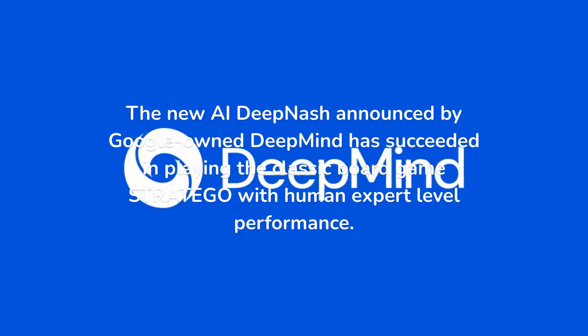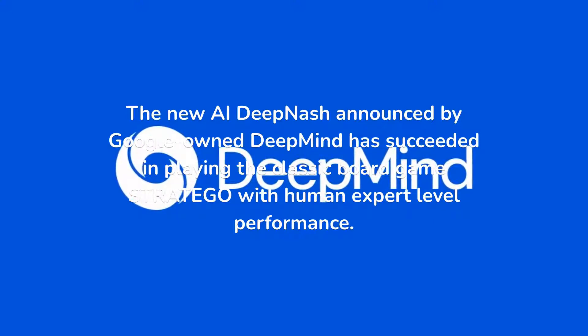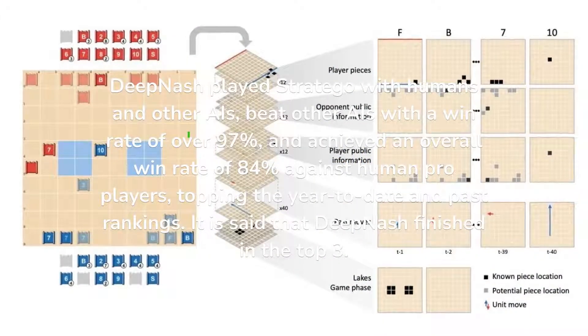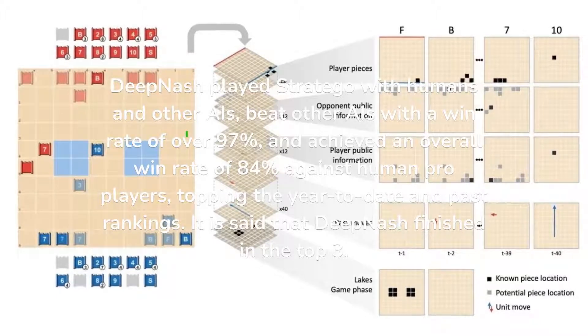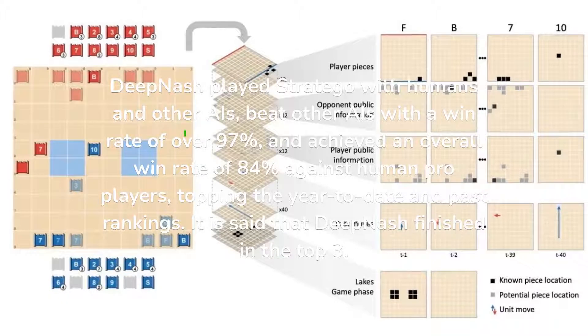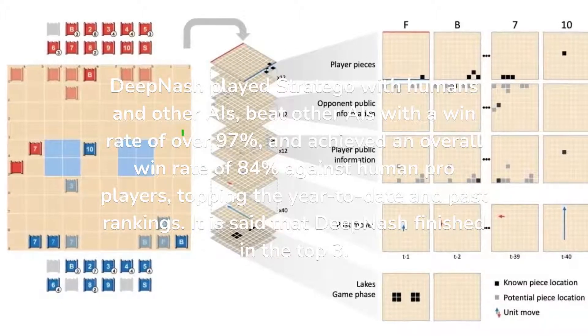The new AI DeepNash announced by Google-owned DeepMind has succeeded in playing the classic board game Stratego with human expert-level performance. DeepNash played Stratego with humans and other AIs, beat other AIs with a win rate of over 97%, and achieved an overall win rate of 84% against human pro players, topping the year-to-date and past rankings. It is said that DeepNash finished in the top three.